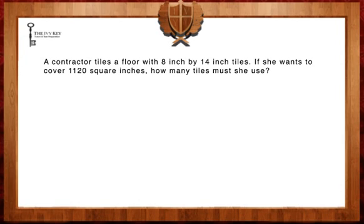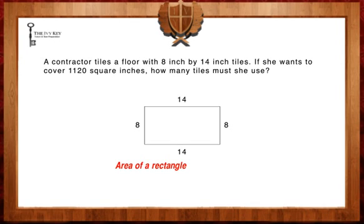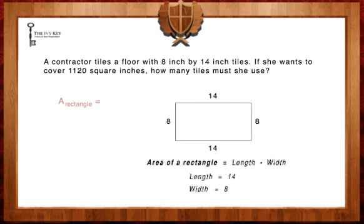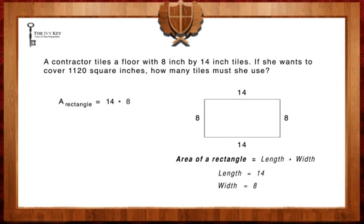The first step to solving this question is to find out the area of each tile. We are told the dimensions of each tile are 8 by 14. In order to solve for the area, we're going to use the formula for finding the area of a rectangle: area equals length times width. We set our length to 14 and our width to 8. We multiply 14 times 8 and get 112. Hence, each tile has an area of 112 square inches.